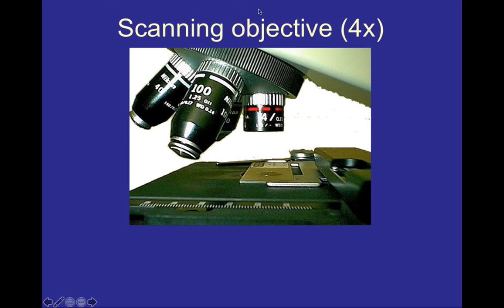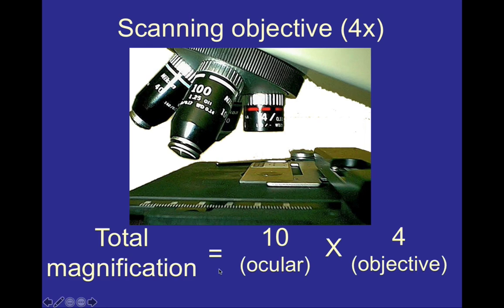The first of our objective lenses is the scanning objective lens, which has a magnification of 4 times. For our purposes, this is the one with the red line, and you can see 4 written on this objective to indicate 4 times magnification. To get the total magnification, we remember that we are also looking through the ocular lens. We take the ocular lens magnification of 10 and multiply it by 4, giving us a total magnification of 40 times. So the picture we're viewing is 40 times as large as it is to the naked eye.